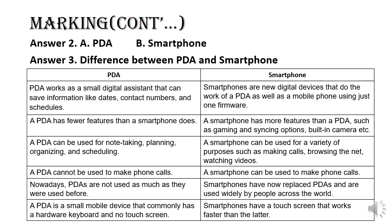Smartphones have now replaced PDAs and are used widely by people across the world, meaning smartphones are now popular and used by many people. A PDA is a small mobile device that commonly has a hardware keyboard and no touch screen — you cannot find a touch screen on a PDA.